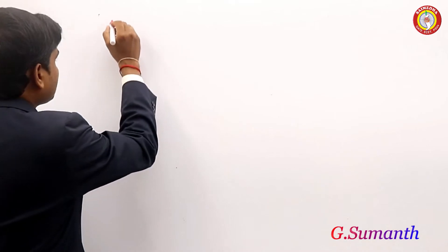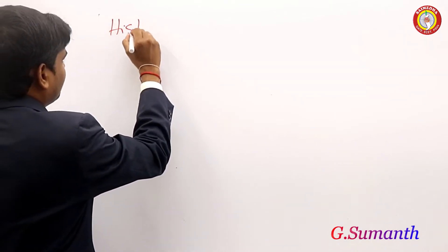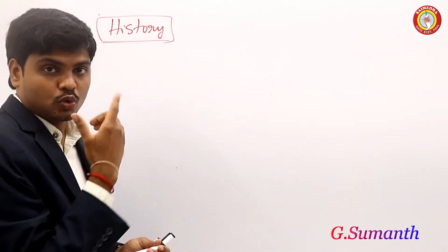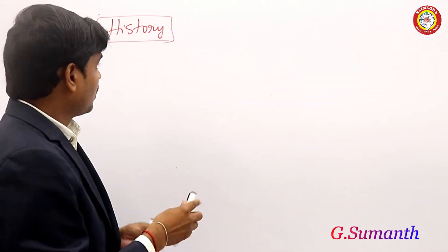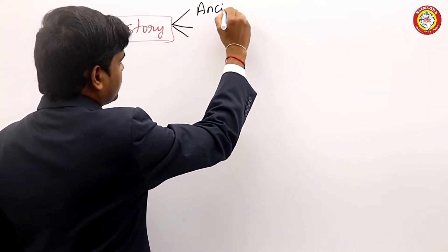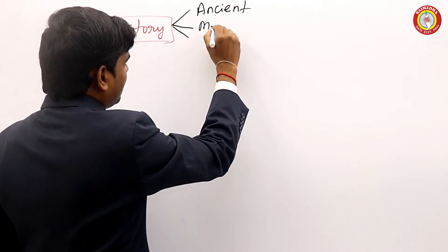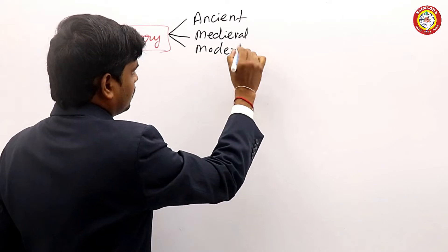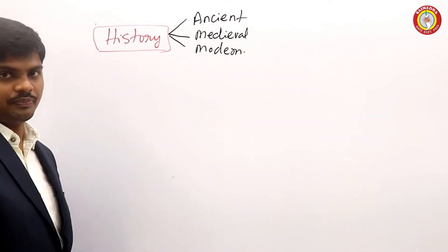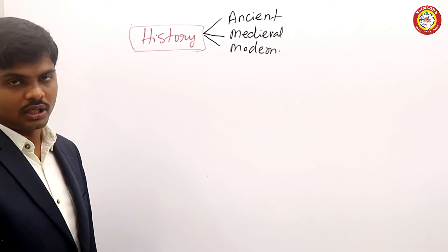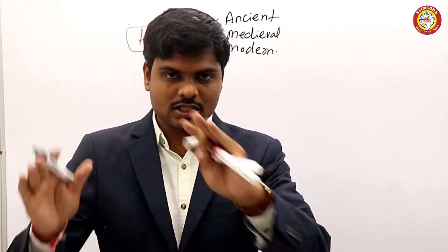Welcome, dear students. For example, if you take the subject history, there are three parts: ancient Indian history, medieval Indian history, and modern Indian history. Indian history is categorized into ancient, medieval, and modern.